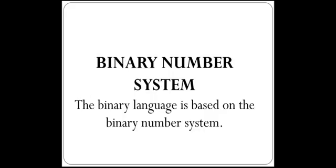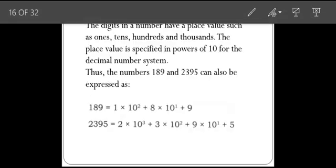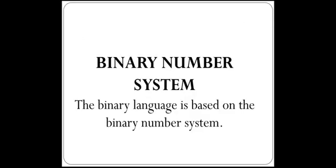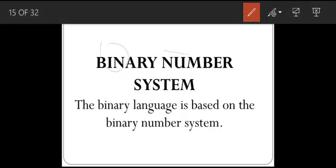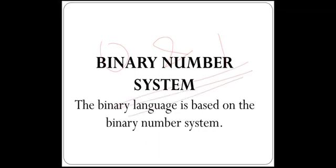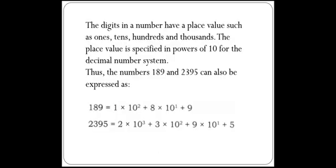Now we will study the binary number system, which is based on zeros and ones — we will only use zero and one. We actually use the decimal number system in our daily life. The digits in a number have place values such as ones, tens, hundreds, and thousands. We express our numbers in the form of the decimal number system.